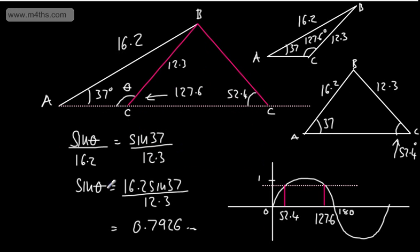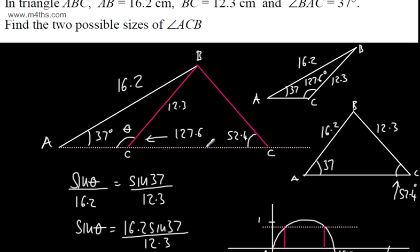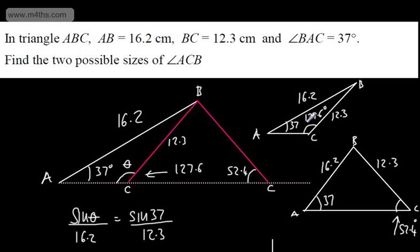Both of those are given correct to one decimal place. We can see with the ambiguous sine rule case, when we get sine theta, sine theta will give us a number between 0 and 1. By symmetry, if we have one theta degrees in, then we'll have the same theta degrees back from 180, which gives rise to two different possible triangles. This is one triangle, this is the other, and we've found the two possible sizes of angle ACB.